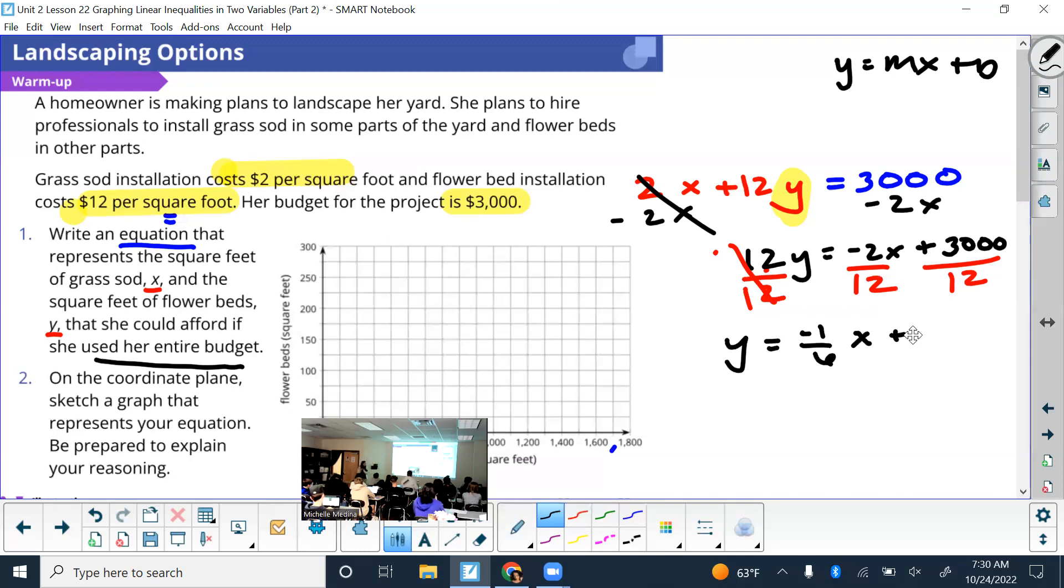I'm going to double check on my calculator. All right, 3,000 divided by 12. Yes, it is 250.